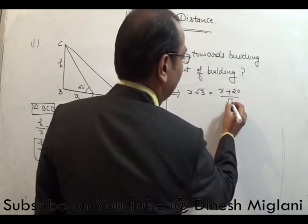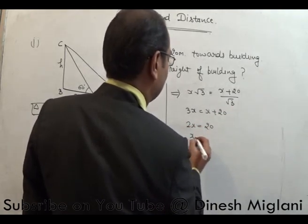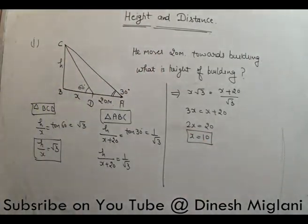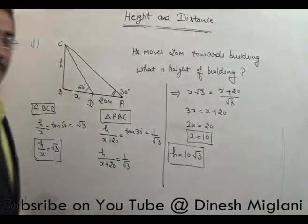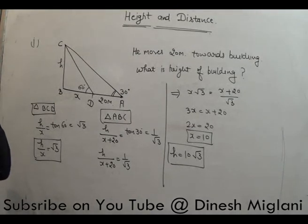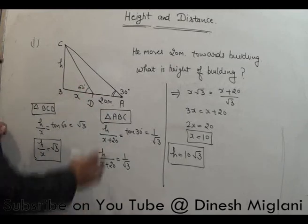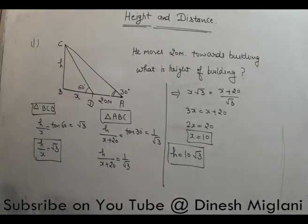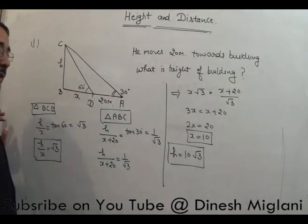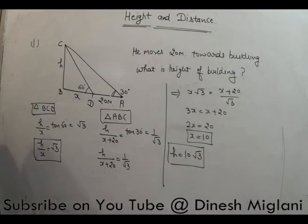Cross multiplying: 3X equals X plus 20, so 2X equals 20, giving X equals 10. Therefore the height H equals 10 root 3. As a shortcut: whenever the angles are 30 and 60, the distance DC is always half of AD. So if AD is 20, DC is 10, and the height is 10 root 3.